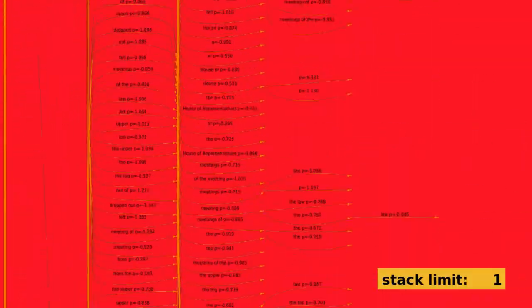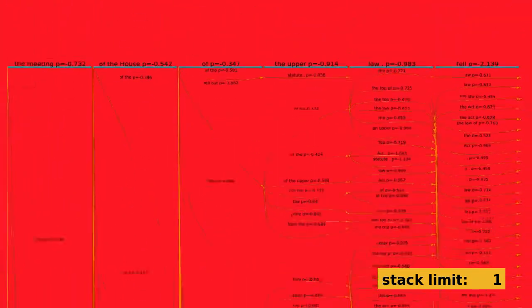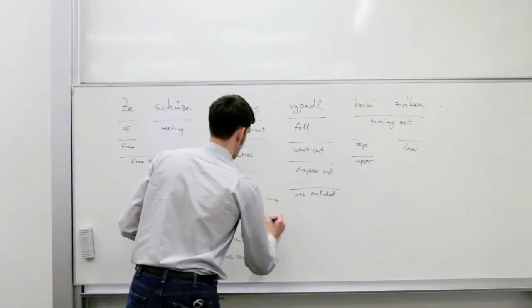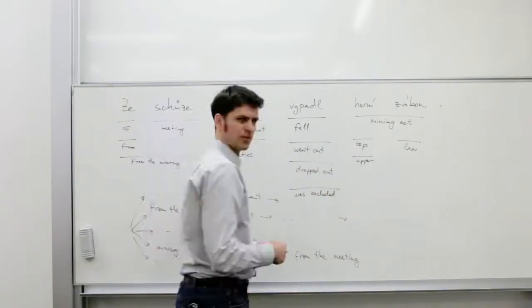The main parameter that controls the amount of pruning in the default search is called the stack limit. In the animation we see how different sub-parts of the search space are explored with less and less pruning. The better scoring or surviving hypotheses are gradually expanded until at the very end the whole input sentence is covered.